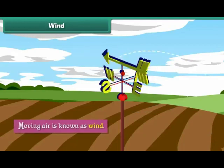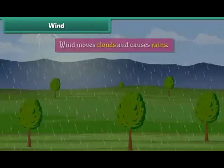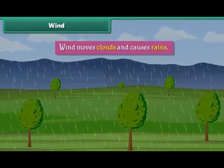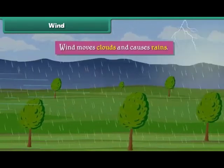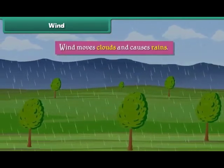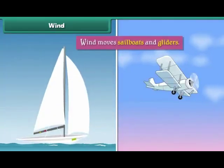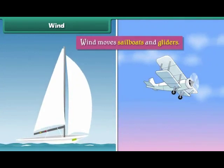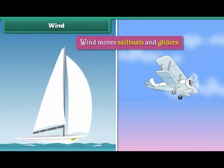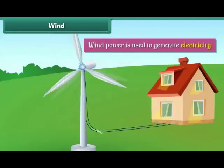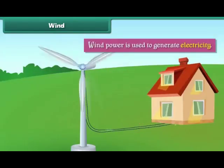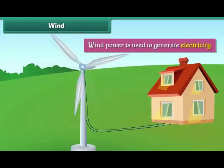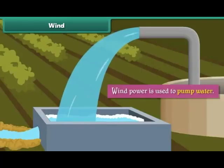Moving air is known as wind. Wind moves clouds and causes rain. Wind moves sailboats and gliders. Wind power is also used to generate electricity and to pump water.